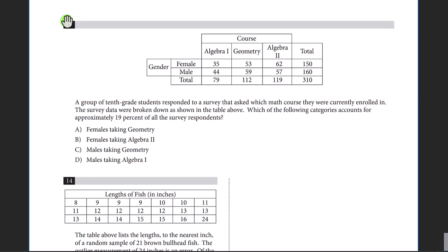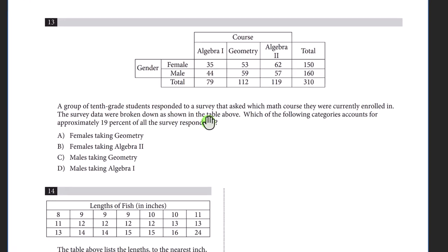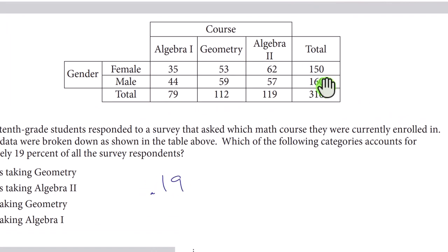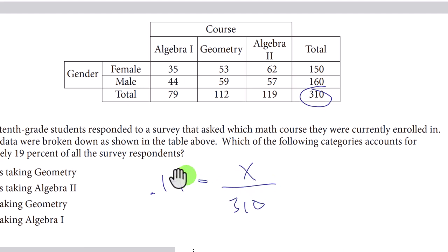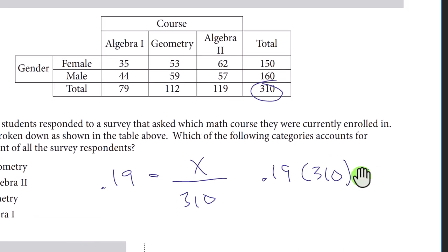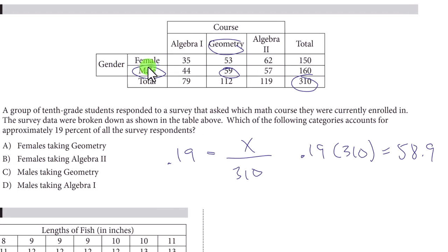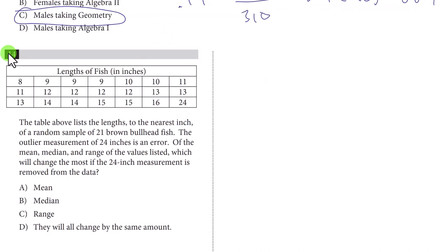Question thirteen: which category represents approximately 19% of all survey respondents? Multiply 0.19 times 310 to get 58.9. Looking at the chart, that corresponds to geometry males. The answer is geometry males.